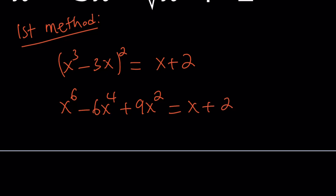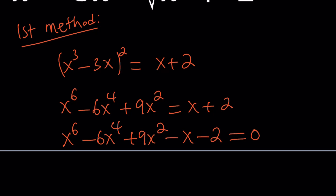We put everything on the same side and we get a hexic equation — 6th degree — for which there is no formula. There isn't a formula even for quintic equations in general, and this is probably not a special one. You can try the rational root theorem, but even if you found a rational solution, you'd have to divide by that factor, and the resulting equation would still be quintic. So solving the quintic would still be challenging.